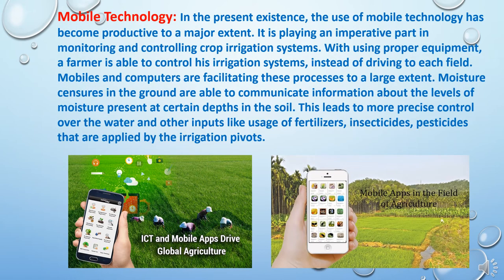Next is the use of mobile technology. The use of mobile technology has become productive to a major extent. It is playing an imperative part in monitoring and controlling crop irrigation systems. With proper equipment, a farmer is able to control his irrigation system instead of driving to each field. Mobiles and computers are facilitating these processes to a large extent. Moisture sensors in the ground are able to communicate information about the levels of moisture present at a certain depth of the soil, leading to more precise control over water and other inputs like fertilizers, insecticides, and pesticides applied by the irrigation pivots.